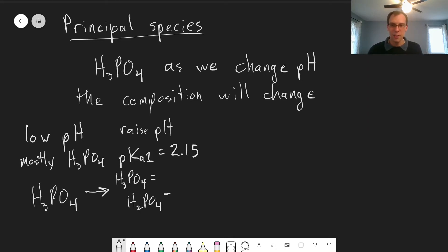So at pH equals 2.15, the concentrations of these species are equal. If we keep going though, if we keep raising the pH, we will get to where the dominant species will instead become the dihydrogen phosphate as the phosphoric acid keeps getting deprotonated by whatever we're using to raise the pH.